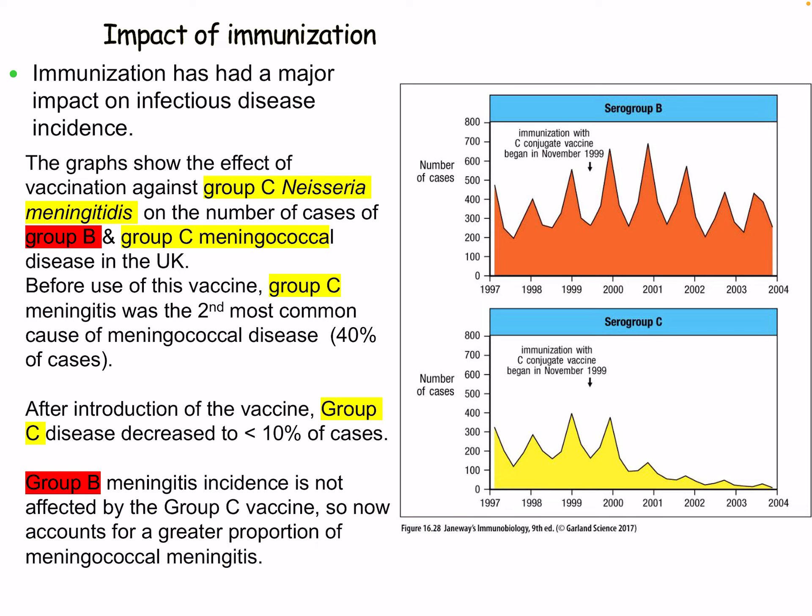Immunization has a major impact on infectious disease incidence. These graphs show the effect of vaccination against Neisseria meningitidis on the number of cases of group B and group C meningococcal disease in the UK. Before the vaccine, group C meningitis was the second most common cause of meningococcal disease, responsible for 40% of cases. We don't have a vaccine for serotype B, but for C, disease levels decreased rapidly after vaccination — to less than 10% of cases — while group B meningitis incidence was not affected.